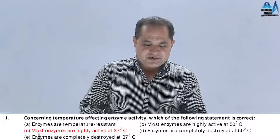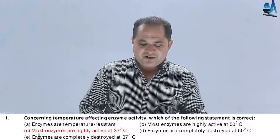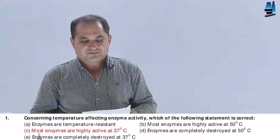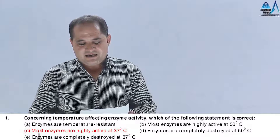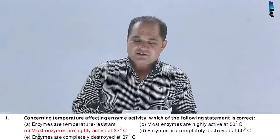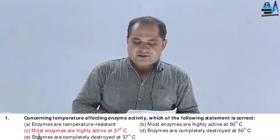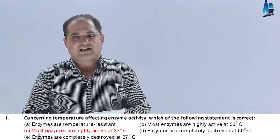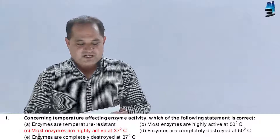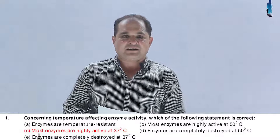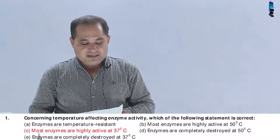Question number 1 concerns temperature affecting enzyme activity. Which one of the following statements is correct? Option A: Enzymes are temperature resistant. B: Most enzymes are highly active at 50 degrees centigrade. C: Most enzymes are highly active at 37 degrees centigrade. D: Enzymes are completely destroyed at 50 degrees centigrade. E: Enzymes are completely destroyed at 37 degrees centigrade. The answer should be C — most enzymes are highly active at 37 degrees centigrade, as discussed in the previous lecture on enzymes.